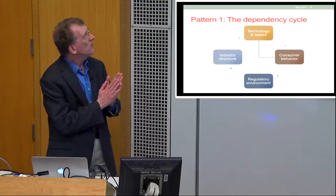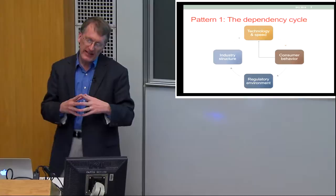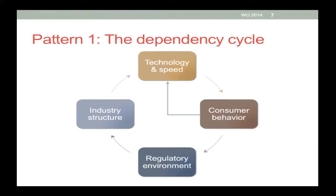There are three patterns I wanted to discuss. First, in the networking world, there is a dependency cycle that has strong influences on what technology gets deployed and what technology succeeds. I take four components: the technology itself, consumer behavior, industry structure, and the regulatory environment. For example, we've had home control applications going back to X10 and power line devices for decades, but consumer behavior, until maybe fairly recently, just hasn't really caught up. And even today, one could argue it is very much a niche usage scenario.